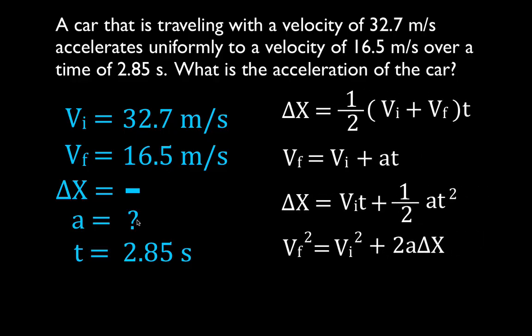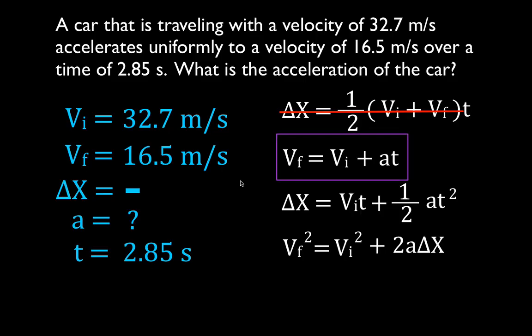Get out your kinematic equations and let's see which equation we're going to use. The first equation doesn't have acceleration in it — we're not going to use that one. The second one has acceleration in it. Do we know the other three variables? The final velocity — yes. The initial velocity — yes. The time — yes. So we can use this equation. The other two equations have the change in position, which we don't know, so we could not use either of those.